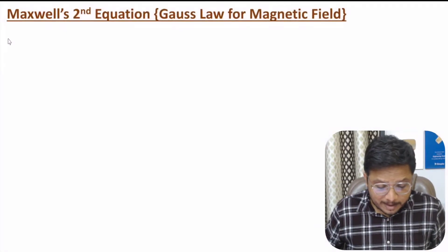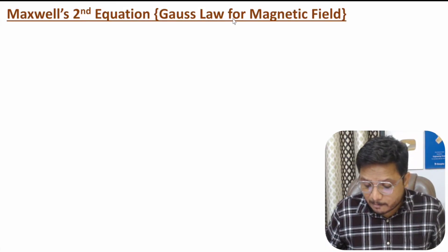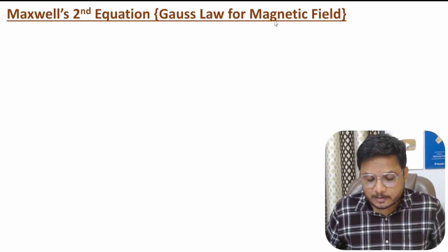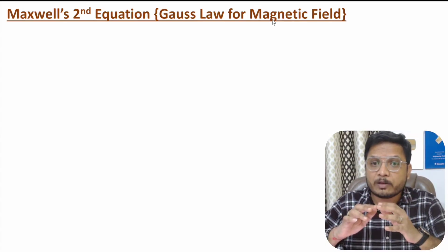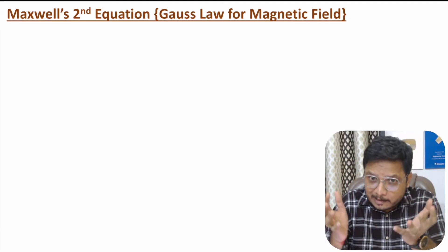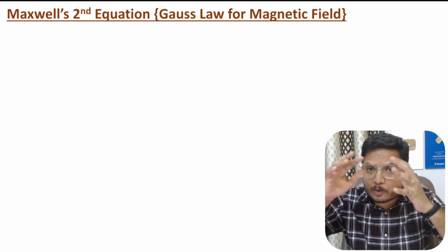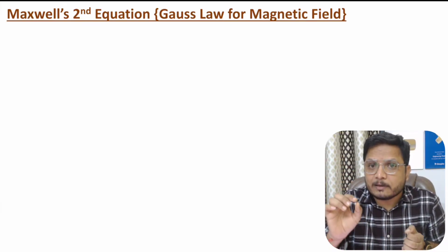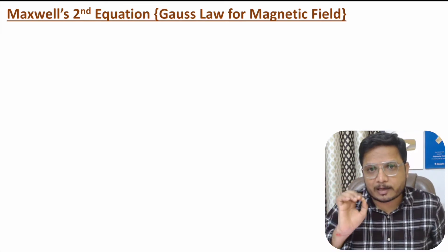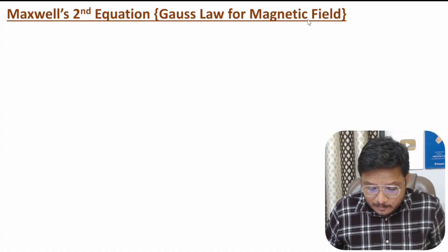Maxwell's second equation is based on Gauss's law for magnetic field. Gauss's law for magnetic field is based on the calculation of total flux passing through an enclosed surface. One should know that the total magnetic flux passing through an enclosed surface is zero.